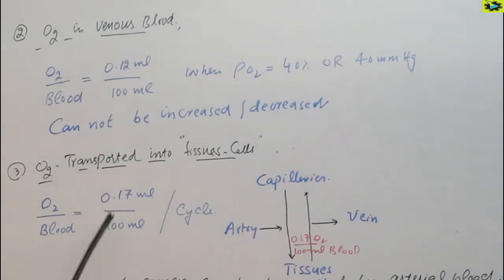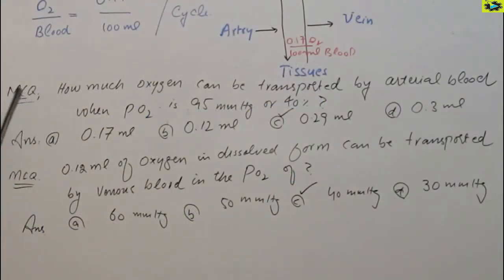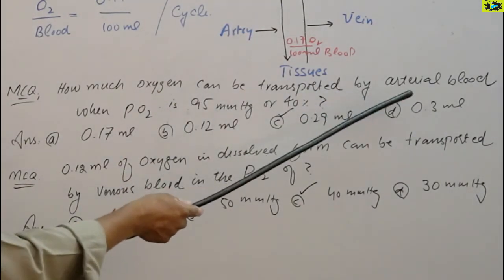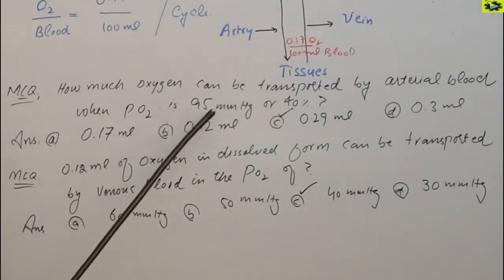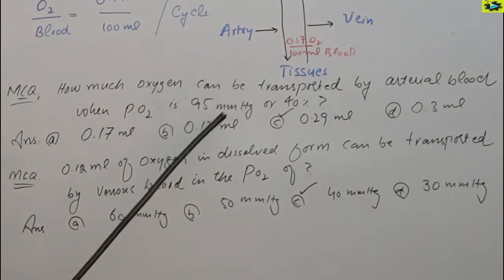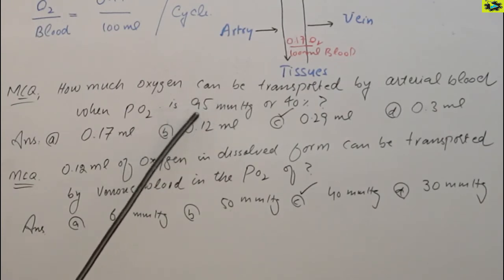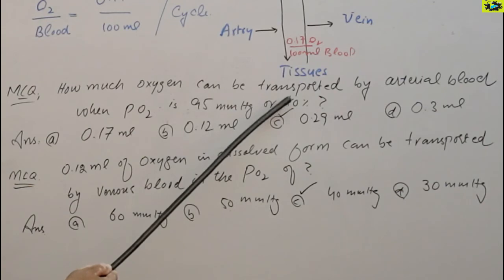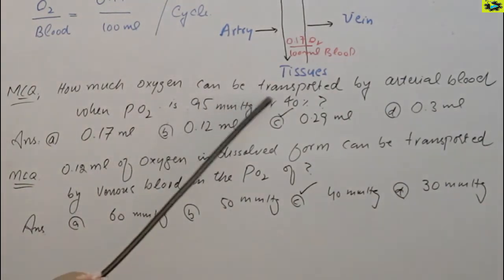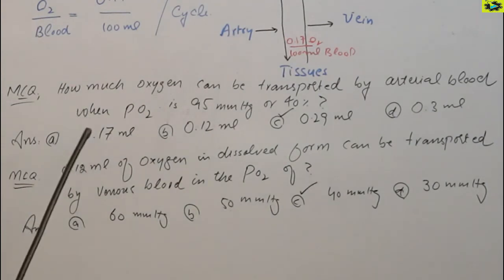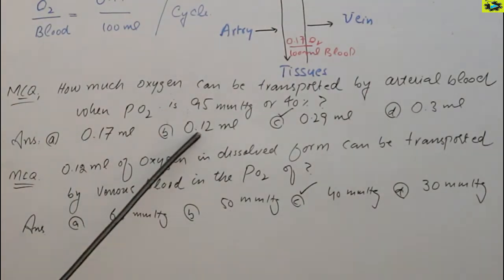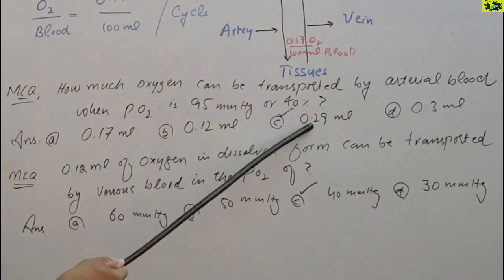How much oxygen can be transported by arterial blood when partial pressure is about 95 mm of mercury? The answer is 0.29 ml or 0.3 ml.